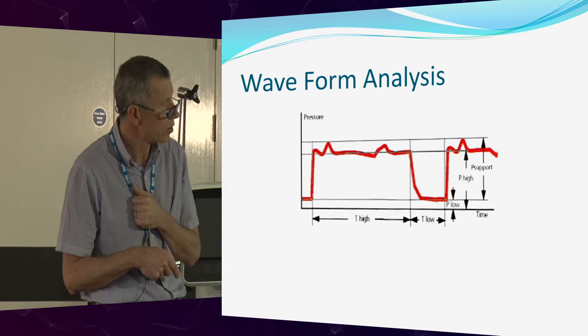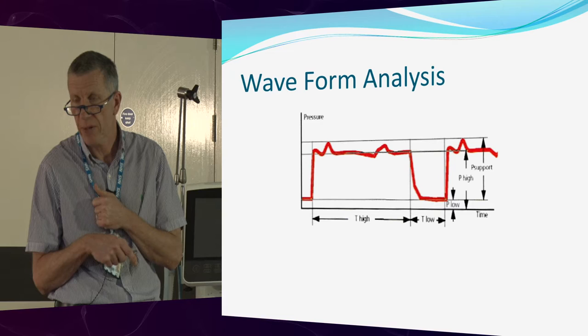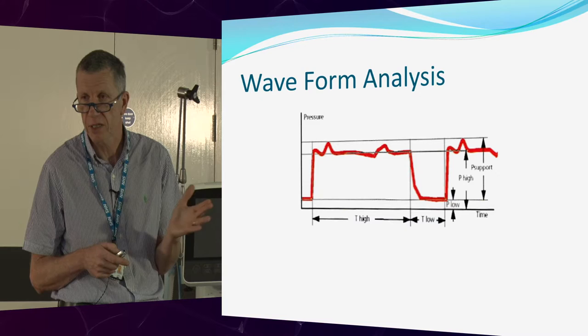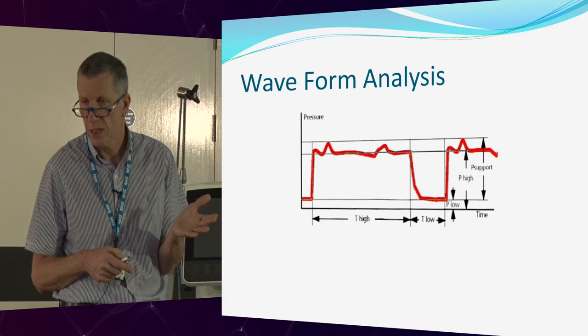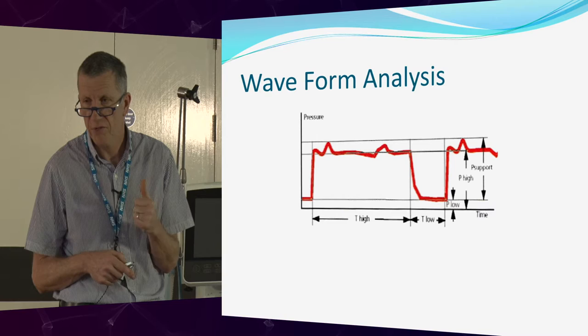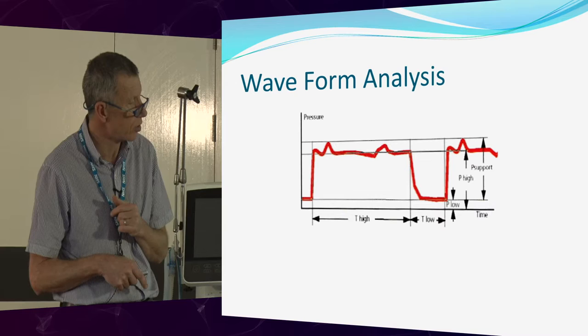We don't worry about rising CO2 too much. Permissive hypercapnia is fine — we don't go for normal blood gases. As long as you keep your pH above 7.15 to 7.2, I don't care what the CO2 is. In those ARDS studies done 10-12 years ago, they were giving huge amounts of bicarbonate infusions to help compensate. But we don't care about CO2 as long as the pH is okay.